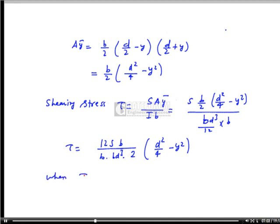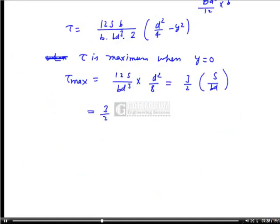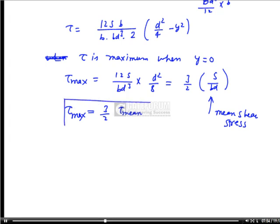The maximum shear stress occurs at the neutral axis when y = 0. Substituting, τ_max = 12S/(bd³) · d²/8 = 3S/(2bd). Since S/bd is the mean shear stress τ_mean, we get τ_max = (3/2)·τ_mean. So the maximum shear stress in a rectangular section is 1.5 times the mean shear stress.